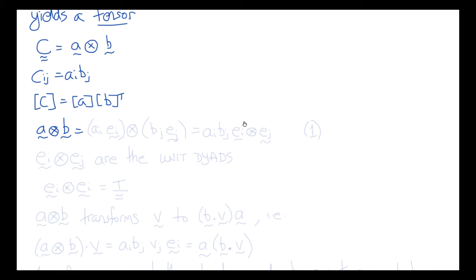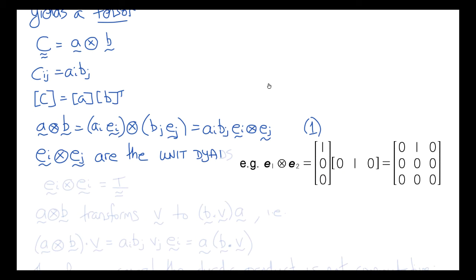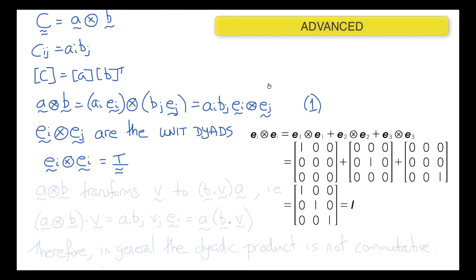We can write A dyadic B equals Ai Ei dyadic Bj Ej, which equals Ai Bj times Ei dyadic Ej. This product of unit vectors — the dyadic or tensor product of the unit vectors — is called the unit dyads. There are nine of these for each possible combination of I and J. In the special case when we take EI dyadic EI, we get the identity matrix, or identity tensor.